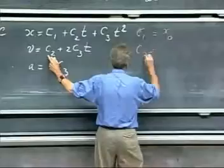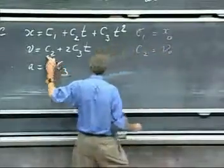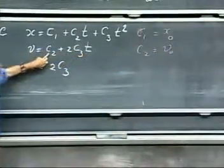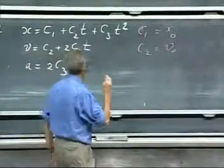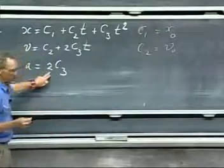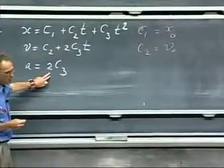c2 is really the velocity at time t equals zero, because when t is zero, that's when c2 is v. And the acceleration is not changing with time, is 2c3.